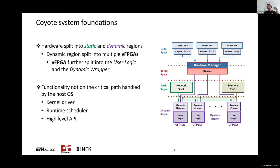Coyote splits the FPGA hardware into static and dynamic regions. The static region is always online and provides the base functionality and essential features — a common approach — but one difference in Coyote is that we also include services in this static region, like network stacks, memory stacks, and other services, which are shared across all applications running inside Coyote. The dynamic region is the basis for sharing the FPGA application and is split into multiple small virtual FPGA regions. Each VFPGA is further split into a trusted dynamic wrapper, which holds the complete virtual context, and fully untrusted user logic, which can be loaded with arbitrary applications written in hardware description languages or HLS.